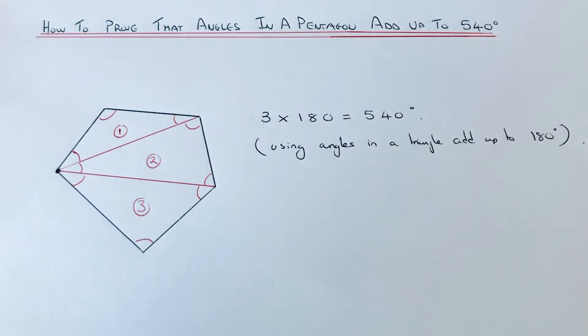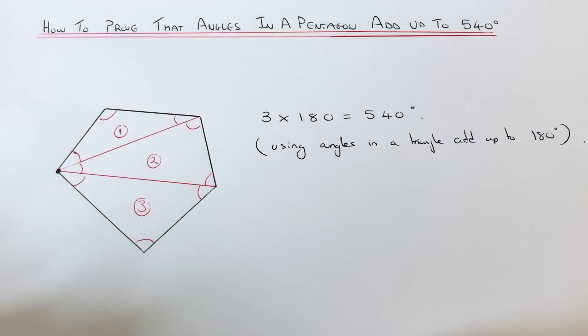Okay, so we've proved then that the angles in a pentagon add up to 540. So I hope you liked this video. If you did, make sure you like and subscribe. Thanks for watching guys, bye-bye.